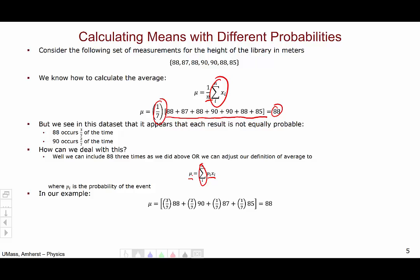In this example, we say that the probability of 88 is 3 out of 7, so we multiply 88 and 3 over 7. The probability of 90 is 2 out of 7, and so we multiply these two numbers together. 87 and 85 both have probabilities of 1 over 7, and so we multiply 87 and 85 by 1 over 7. If you work this out in your calculator, you will see that you get the exact same result of 88.